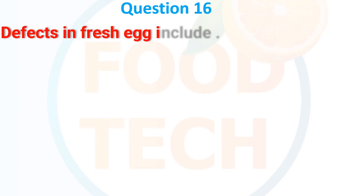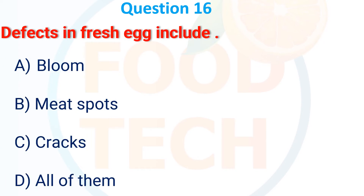Defects in fresh eggs include: A, bloom; B, meat spot; C, cracks; D, all of them. The answer is D, all of them.